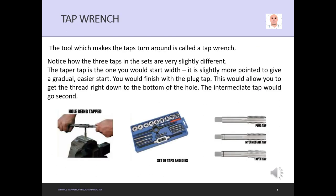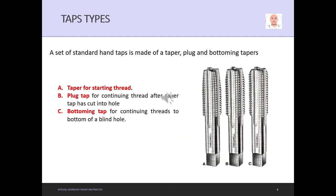The tool which makes the taps turn around is called the tap wrench. Notice how the three taps in the sets are very slightly different. The taper tap is the one you would start with—it is slightly more pointed to give a gradual, easier start. You finish with the plug tap, which allows you to get the thread right down to the bottom of the hole. The intermediate tap would go second.